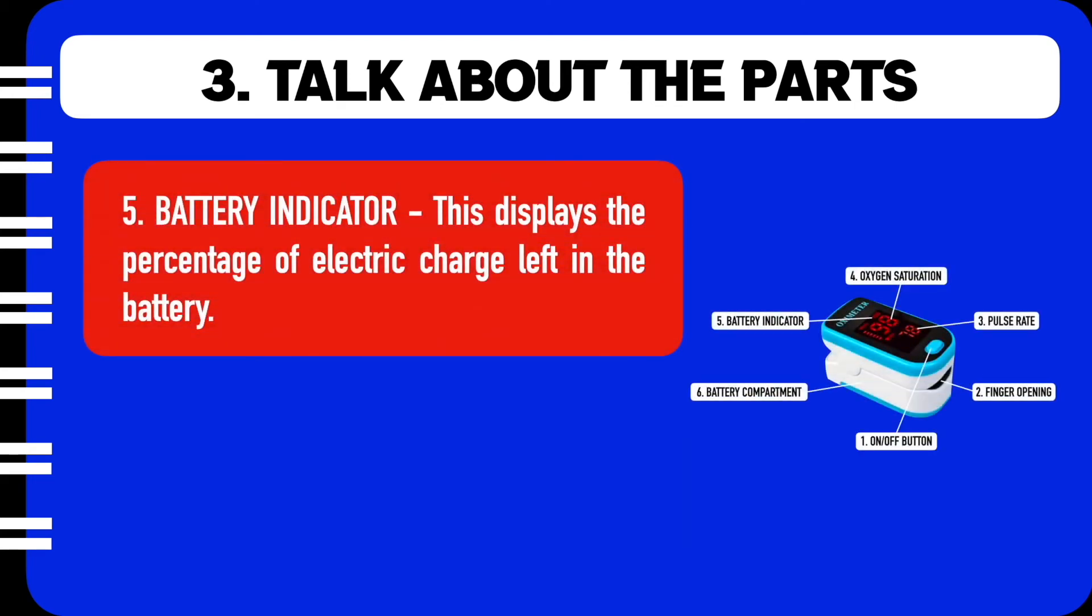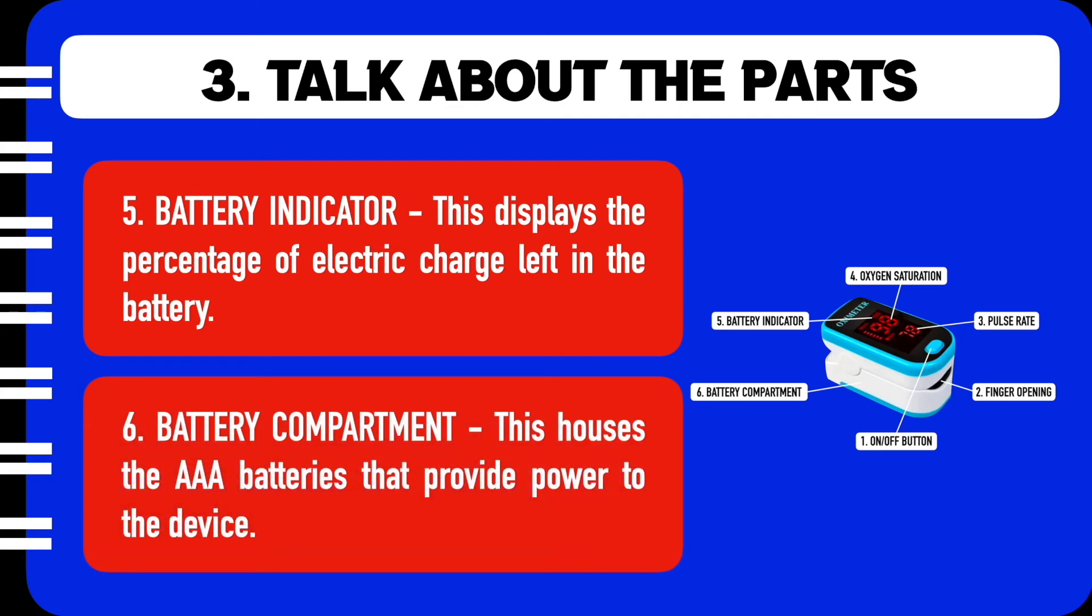The fifth component is the battery indicator. This displays the percentage of electric charge left in the battery. The sixth component and the last component is the battery compartment. This houses the AAA batteries that provide power to the device.